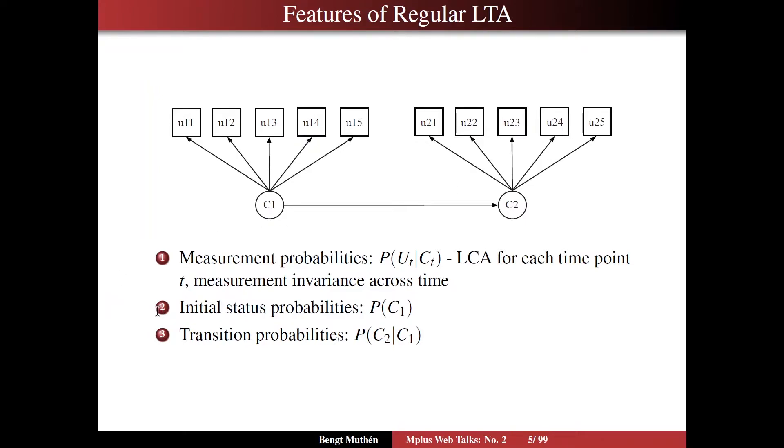The second part is the initial status. What are the probabilities of the latent classes in the beginning of this repeated measurement situation? The third part is the transition probabilities. How does C1 influence C2? How do changes in latent class membership at time 1 get turned into latent class probabilities at time 2? What are the probabilities for staying in the same class versus moving to another class?